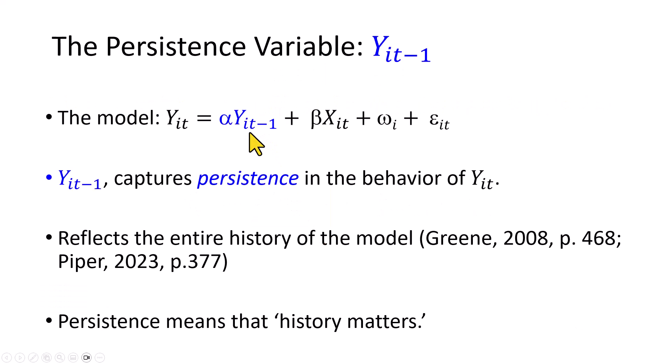This variable, which is endogenous by construction since it is the lagged value of the dependent variable, captures what's called persistence in the behavior of the series. Persistence here suggests that history or past behavior plays a role in the current behavior of the dependent variable. In other words, the way that Y responds to the explanatory variables today in part depends on how it responded in the past. And so in a nutshell, persistence means that history matters.